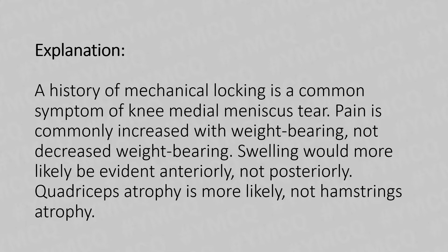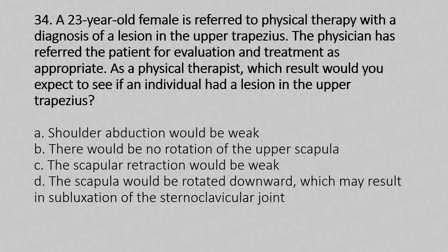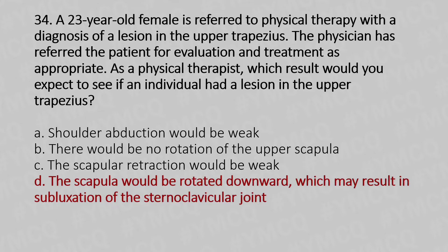Now let's move to our 34th question. A 23-year-old female is referred to physical therapy with a diagnosis of a lesion in the upper trapezius. The physician has referred the patient for evaluation and treatment as appropriate. Which result would you expect to see if the individual had a lesion in the upper trapezius? Option A: Shoulder abduction would be weak. Option B: There would be no rotation of the upper scapula. Option C: Scapular retraction would be weak. Option D: The scapula would be rotated downward, which may result in subluxation of the sternoclavicular joint. The answer is Option D.